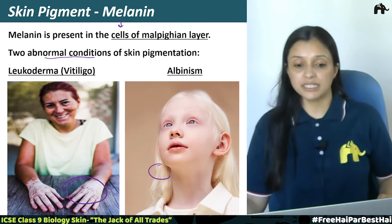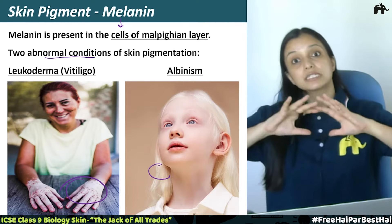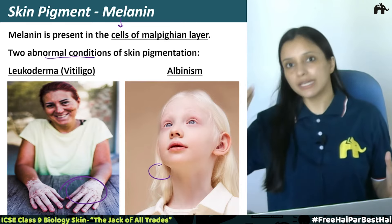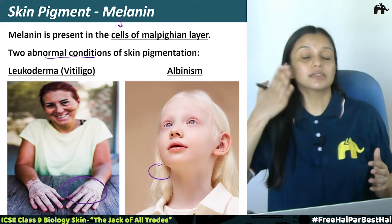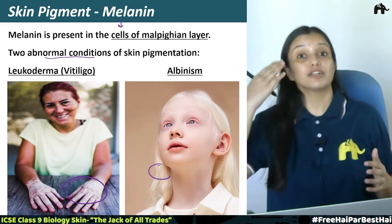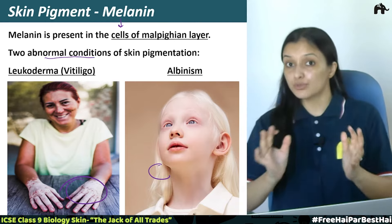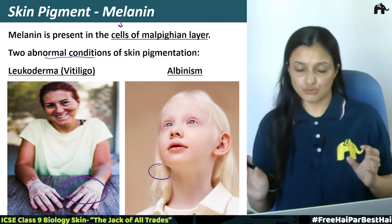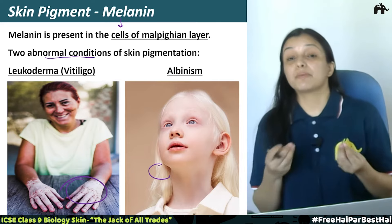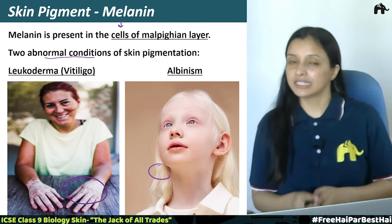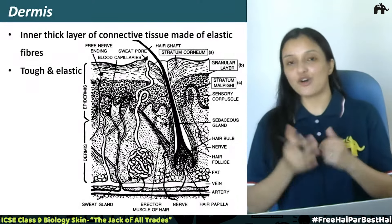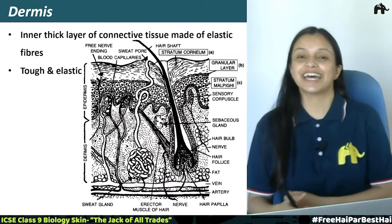The second abnormal pigmentation condition is albinism. This is a condition in which there is a complete loss of skin pigment. Since the pigment is entirely absent, the capillaries beneath the skin become visible — because blood is flowing, the whole skin gives a light pinkish shade, as you can see in the picture. Even from the eyes, there will be pigment loss. This is the second pigmentation condition.